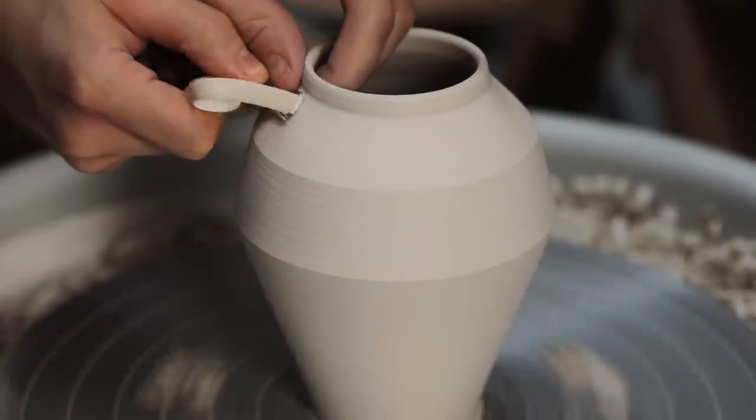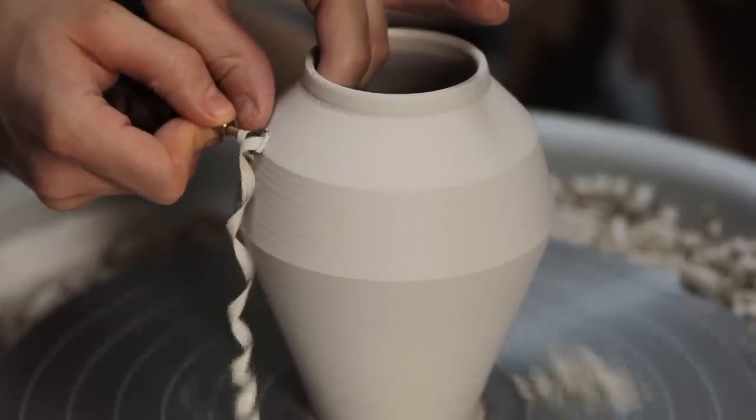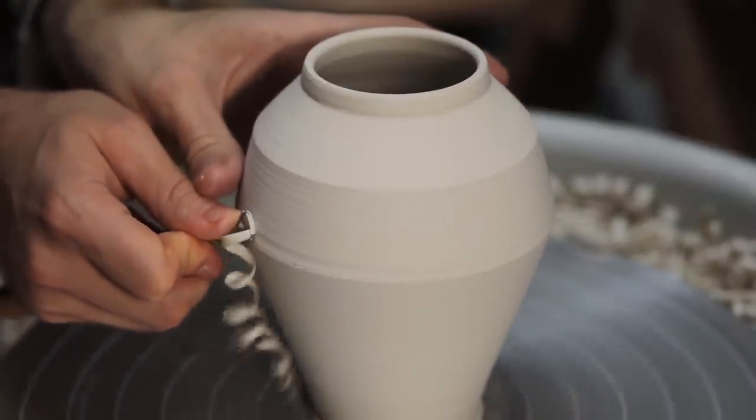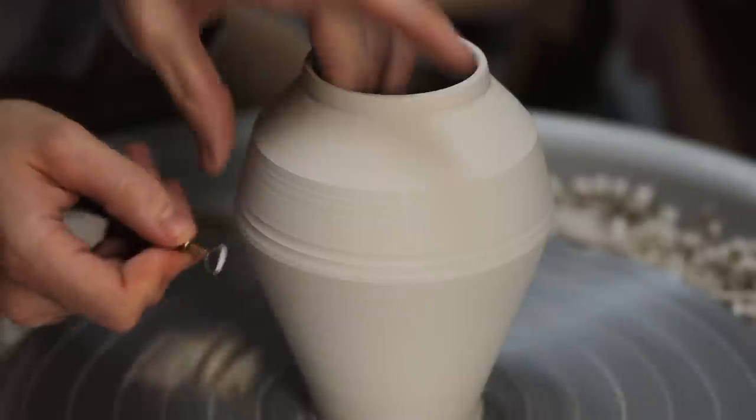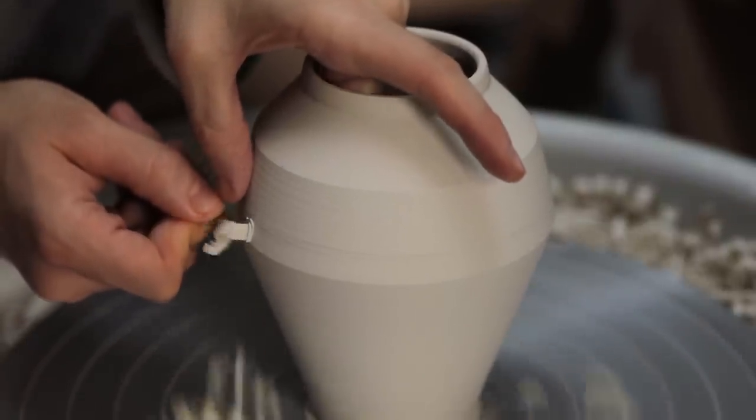An old tutor of mine used to always describe the process of trimming as being a far more mechanical task as compared to throwing. It's the process of refining the shape and removing excess clay to make the pots feel lighter.